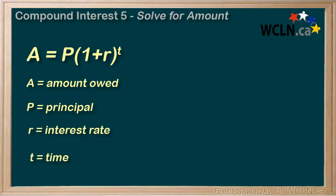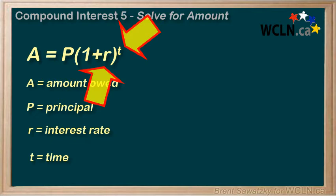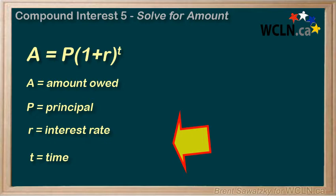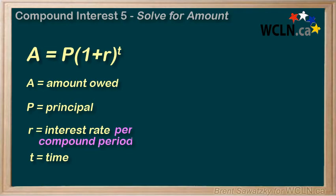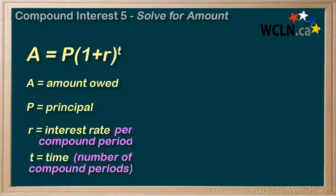The parts of this equation that cause the most confusion are r and t. There are two ways to help make sense of these — let's explain both and you can decide which makes most sense to you. Method 1: we leave the equation exactly as is, A equals P(1 plus r) to the t, and explain that r and t are both in terms of the compounding period. So r becomes the interest rate per compounding period, and t equals the number of compounding periods in the life of the loan.